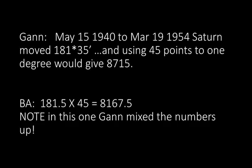Gann, May 15, 1940 to March 19, 1954 — Saturn moved 181 degrees, 35 minutes. And using 45 points to 1 degree would give 8,715. BA: 181.5 times 45 equals 8,167.5. Note in this one, Gann mixed the numbers up. Here's the 8, here's the 7, here's the 1, and here's the 5. So he's doing this purposely, and he wants the reader — which would have been Spawn — to know it.